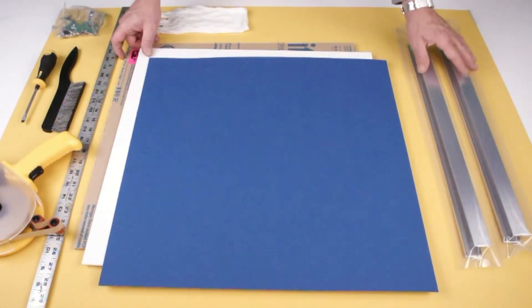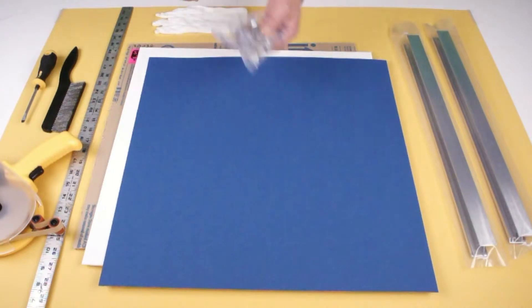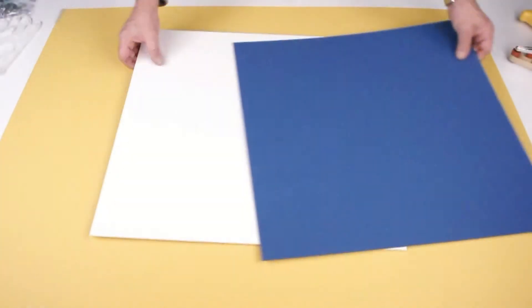You will also need a shadow box frame cut to size and hardware. For tools, we recommend an anti-static whisk brush, an adhesive tape gun, screwdriver, ruler, and protective gloves.